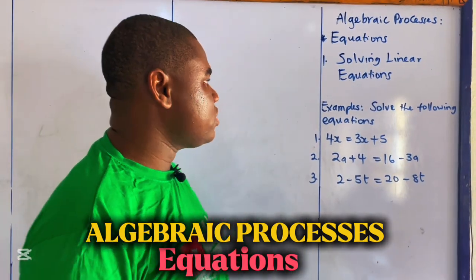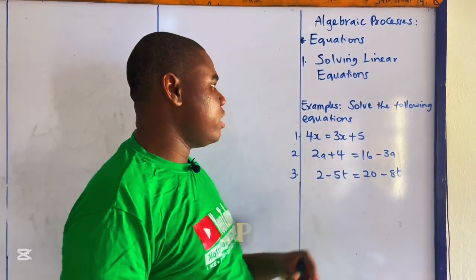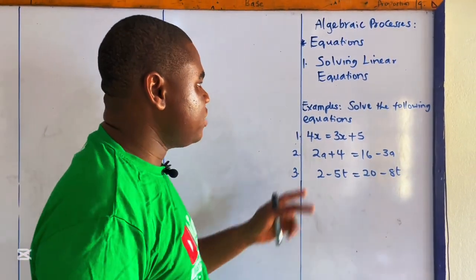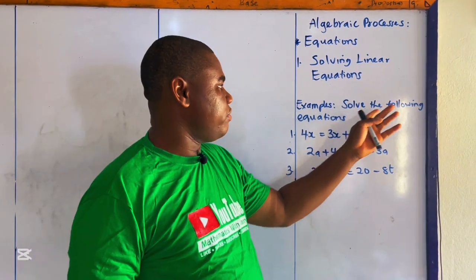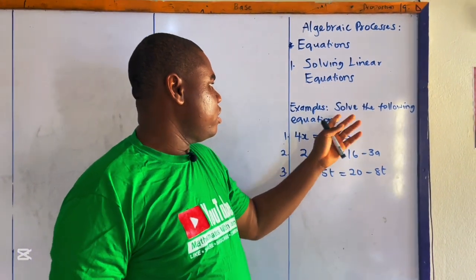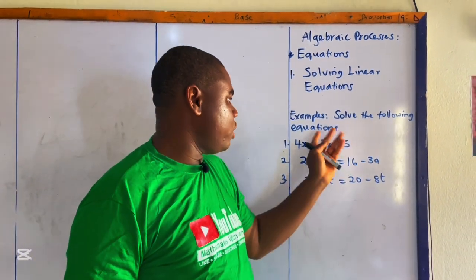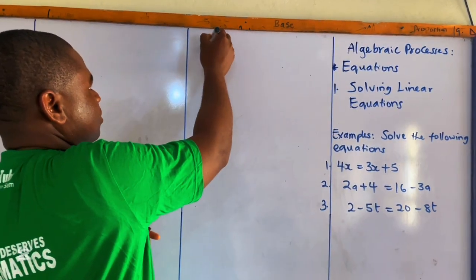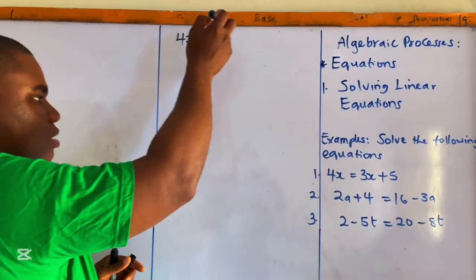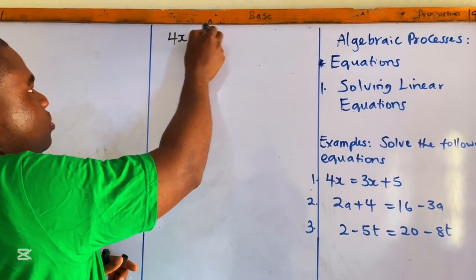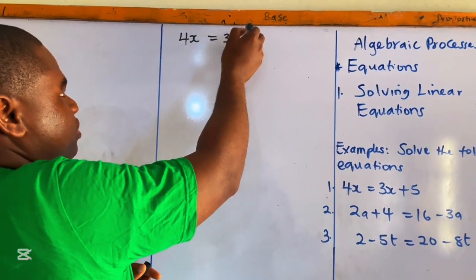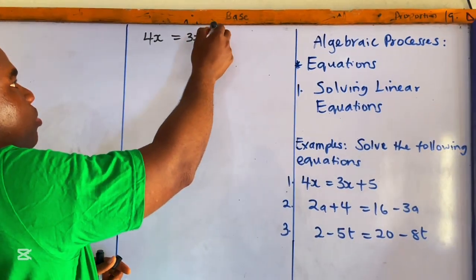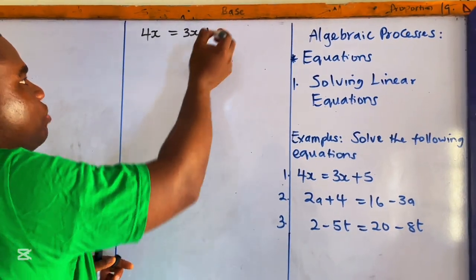Now let's go to our examples. The first one says: solve the following equations. The first equation we have is 4x equals 3x plus 5.